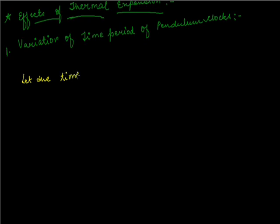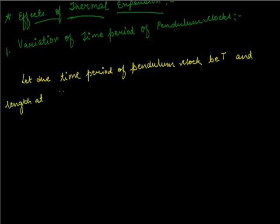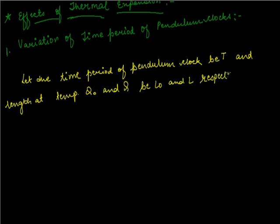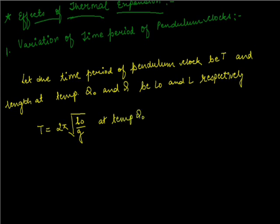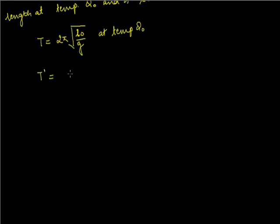Let the length at temperature theta naught and theta be L0 and L respectively. Thus T equals 2 pi under root L0 upon G at temperature theta naught, and T dash equals 2 pi under root L upon G at temperature theta.